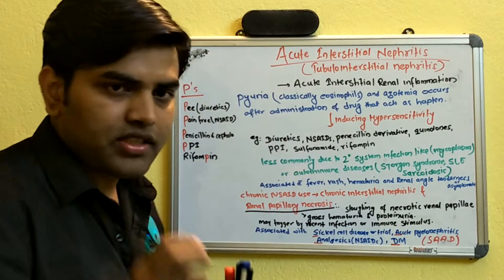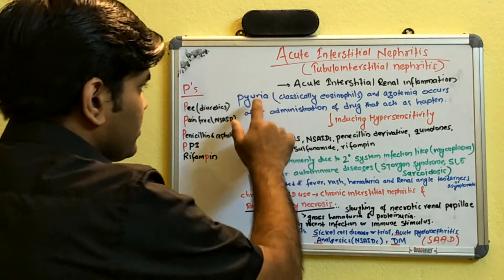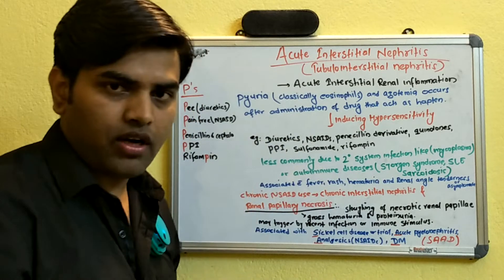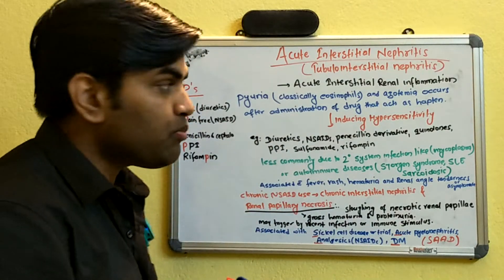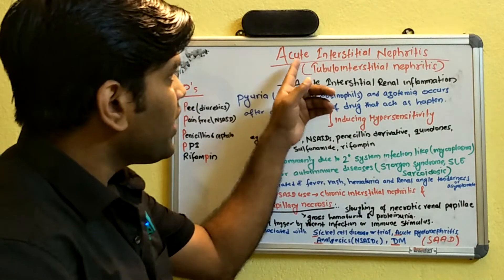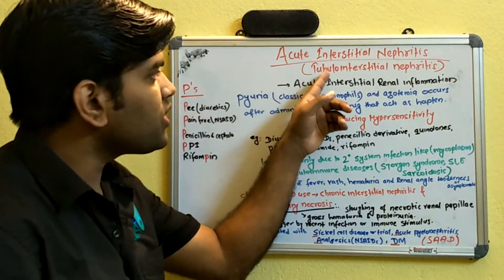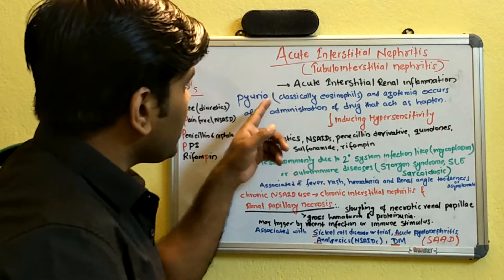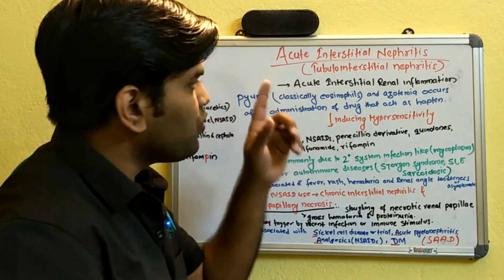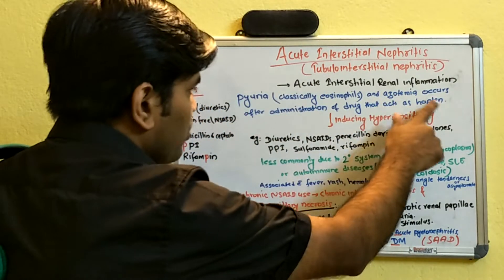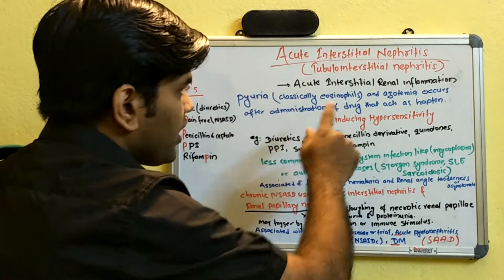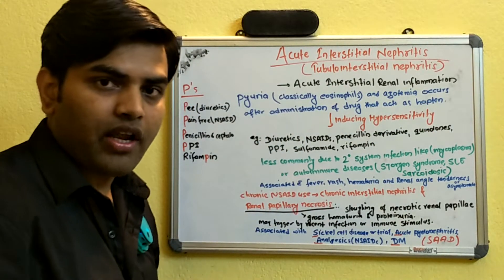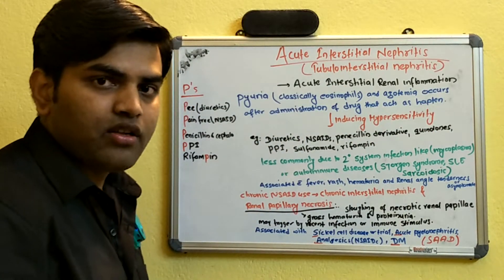Acute interstitial nephritis presents with pyuria. Classically, eosinophils are found in the urine — this is an important hallmark of this condition. Azotemia occurs after the administration of drugs that act as haptens.